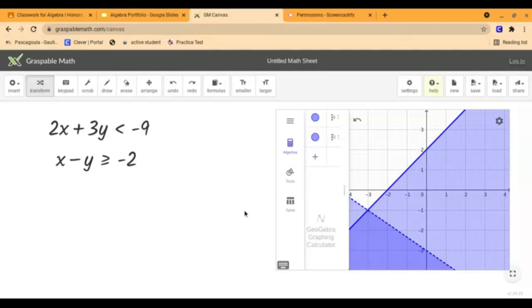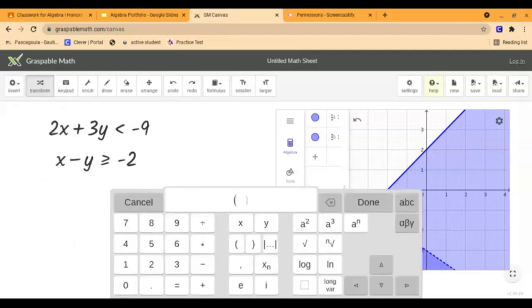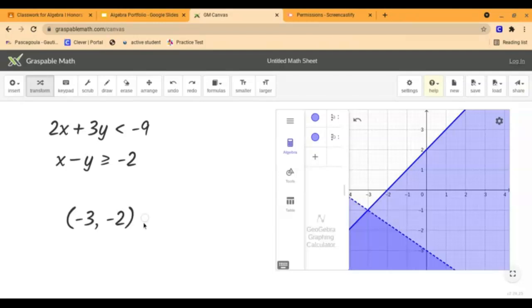And the next step is going to be plotting our three points onto our graph which one of those points is going to be our solution. And our solution point is going to have to be plotted in this darker colored area because that's where the inequalities overlap so that's where our solution is going to be. So I think I'm going to choose to do negative 3 negative 2 and in order to put that point on the graph we're going to come over here to our insert button and choose math expression and we're just going to type that in, negative 3 negative 2 and hit done and again we're going to find that little white dot and drag it over.